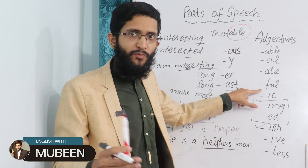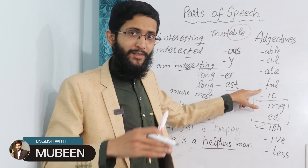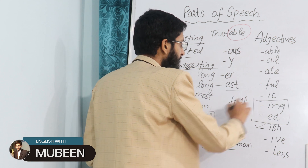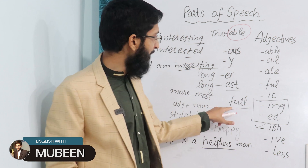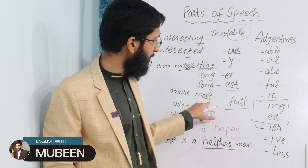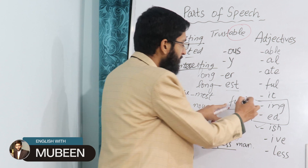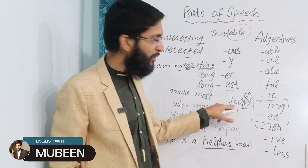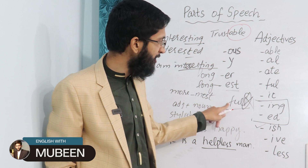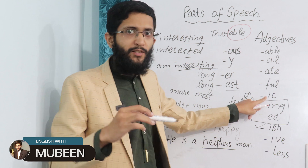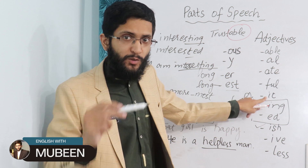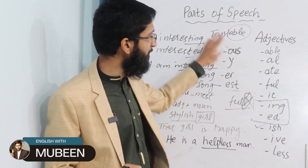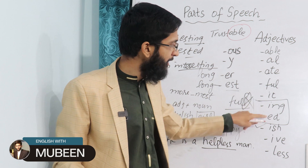Then '-ful': beautiful, wonderful — 'full' coming at the end. It has double L at the end, but when it combines with another word like 'beauty', you remove the last letter, giving 'beautiful' with a single L. This is the spelling rule. Then '-ic': microscopic — you see I-C coming at the end of the adjective.